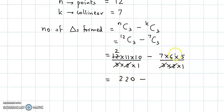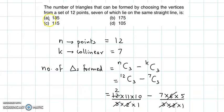3 times 2 times 6, we need to cancel with 6, this becomes 35. So if we subtract, 220 minus 35 gives us 185. So my final answer is option A, 185.